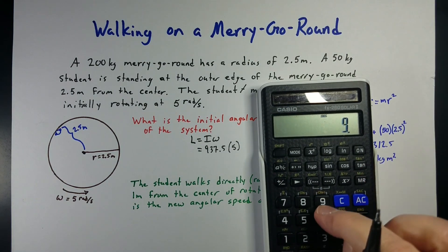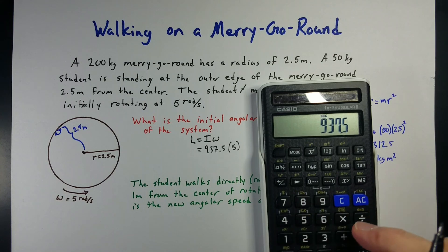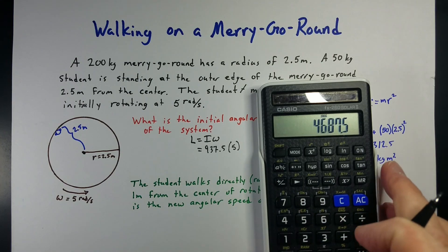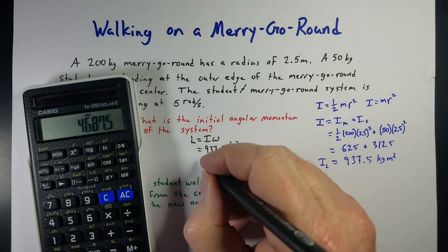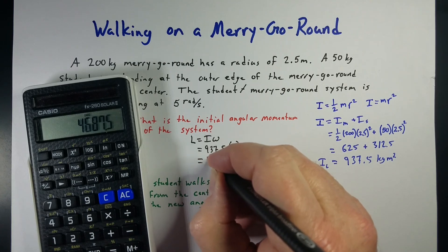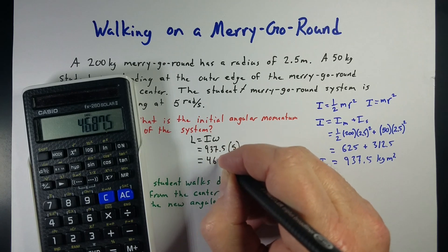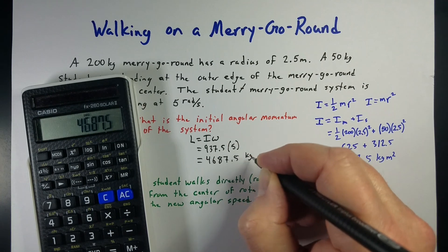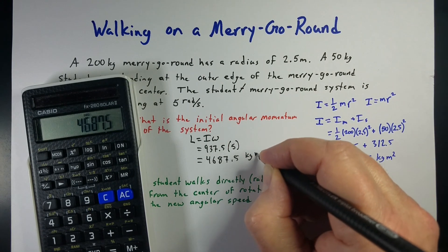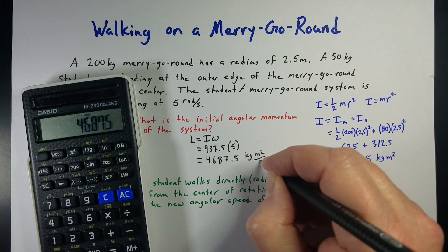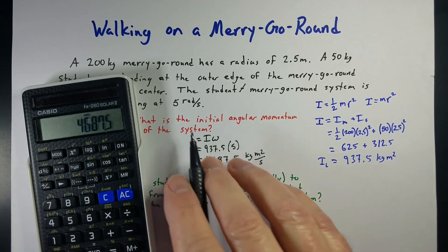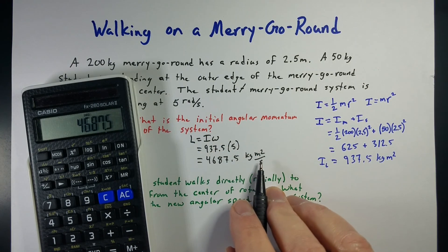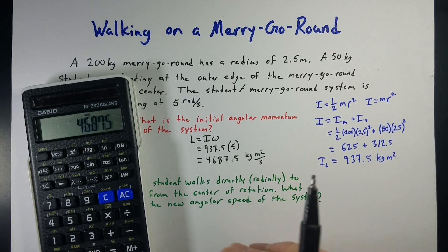So, if we take 937.5 times 5, we get an angular momentum of 4,687.5 kilograms meters squared over seconds. We kind of drop off the radians, since it's 5 radians per second, it kind of disappears. That's okay, it'll come back later.